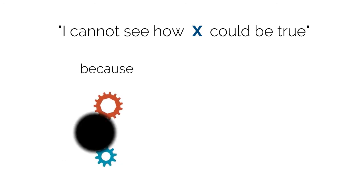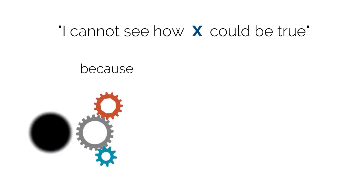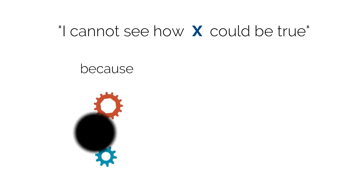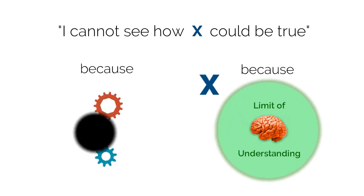For instance, it might be that I cannot see how x could be true because I do not understand a crucial part of x that would show me how x is true. Or I cannot see how x could be true because my understanding is limited by what my human brain is capable of understanding.